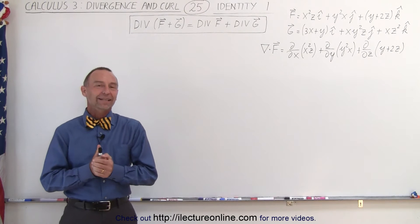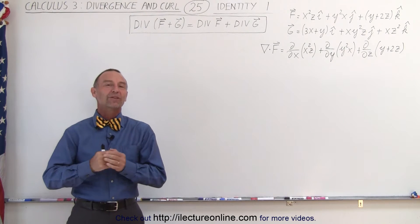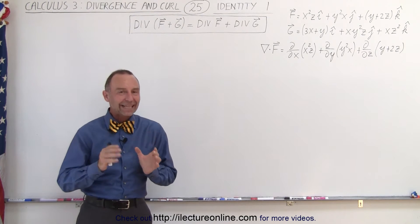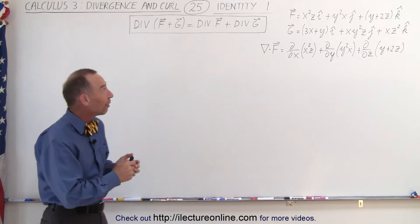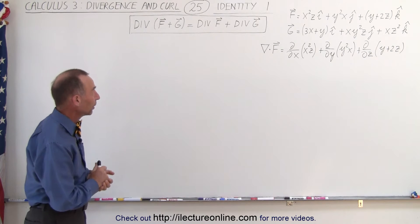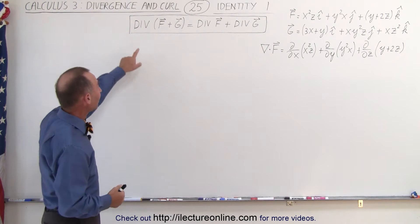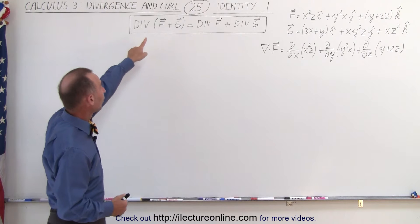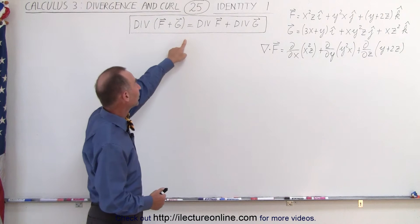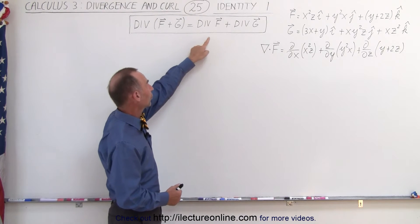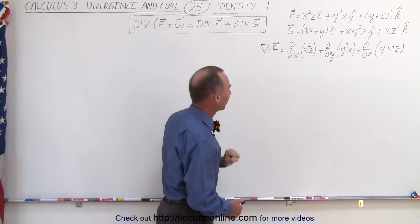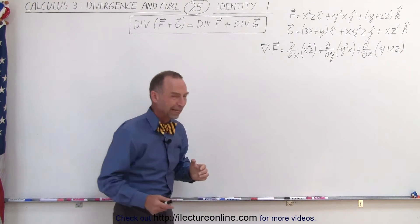Welcome to ElectronLine. Now we're going to explore a few identities that involve the divergence and the curl. Our first one is that the divergence of the sum of two vector fields is equal to the divergence of the first vector field plus the divergence of the second vector field.